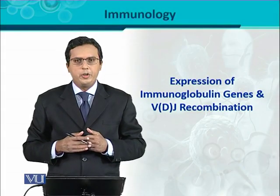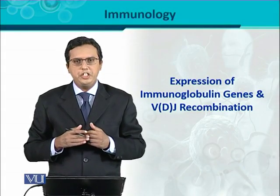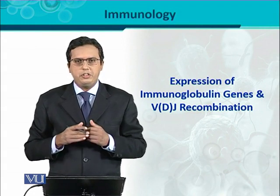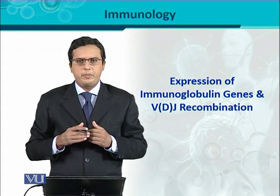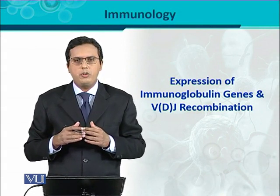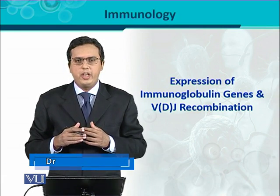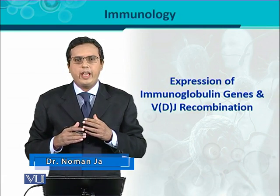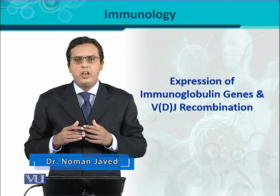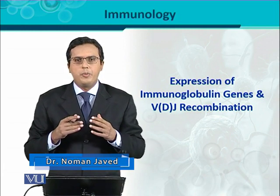Expression of immunoglobulin genes and V, D, J recombination. This is a very important chapter in which we discuss an overview regarding the immunoglobulin genes and how they are going to be expressed in order to produce the immunoglobulins.